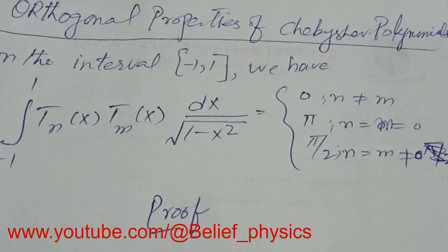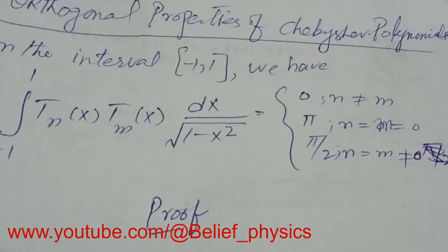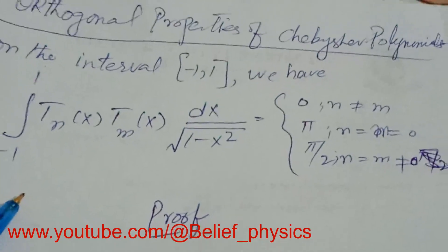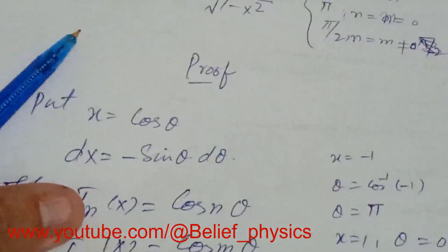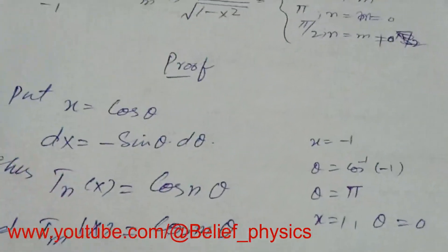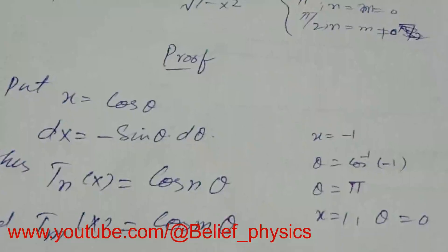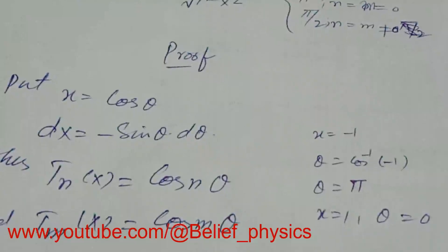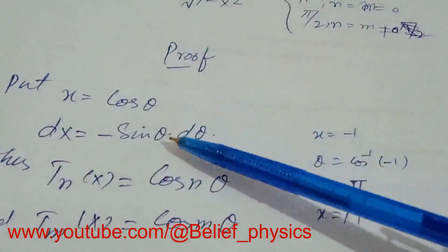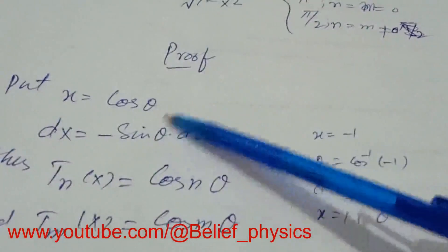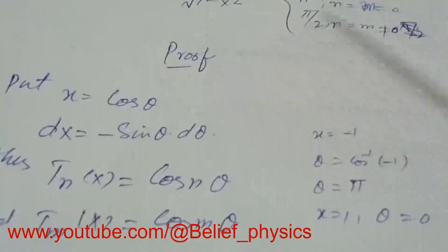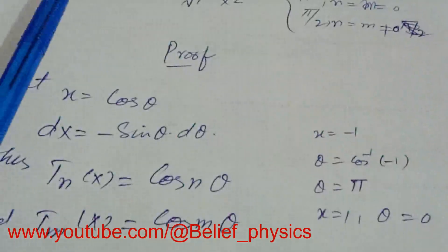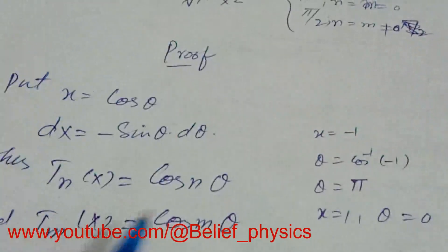The proof is very simple. We use the trigonometric definition of the Chebyshev polynomial: if we put x equal to cos theta, then dx equals minus sine theta d theta, T_n(x) becomes cos(n theta), and T_m(x) becomes cos(m theta).